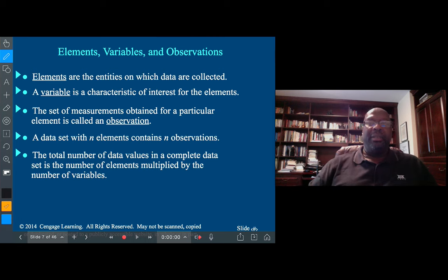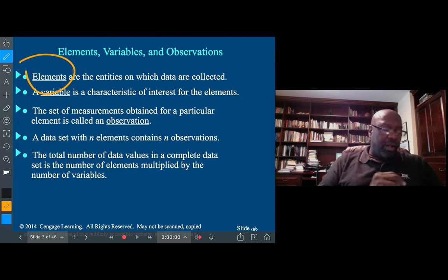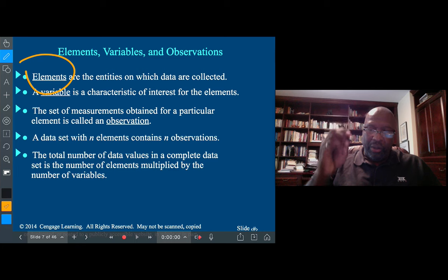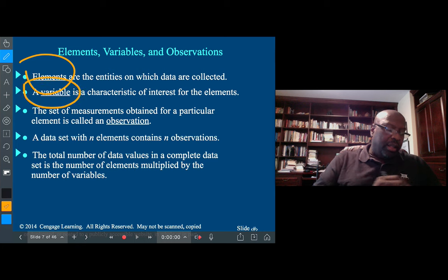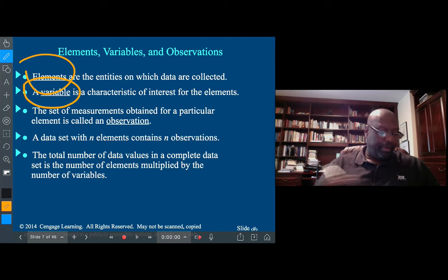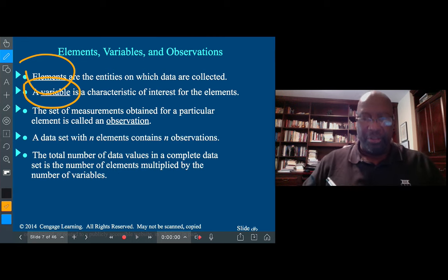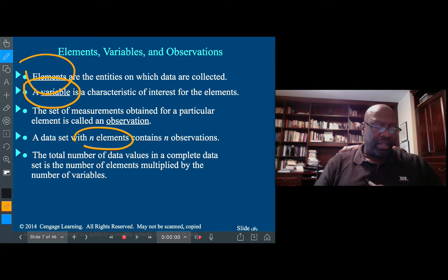When we collect data, we call that a data set. That data set has a number of attributes. One is called elements - the elements are all the items we collected data on. The 15 or 20 cars in my data set will be the elements. If I'm collecting data on the time it takes to go from zero to 60, that is a variable of interest. The set of all these measurements for the 15 or 20 cars would be my observations. Each time I measure how long it took that car to get from zero to 60, that is an observation. If there are n elements, there are n observations.